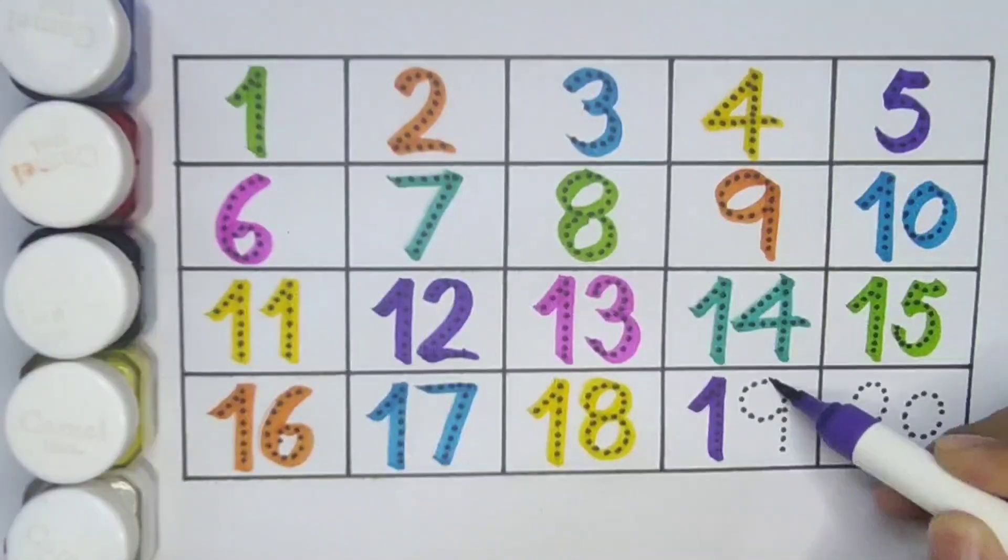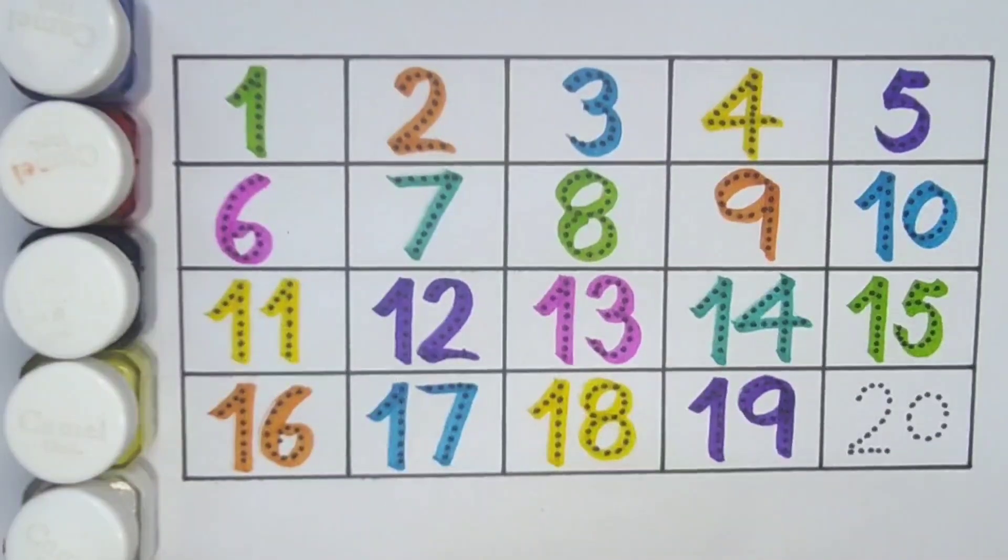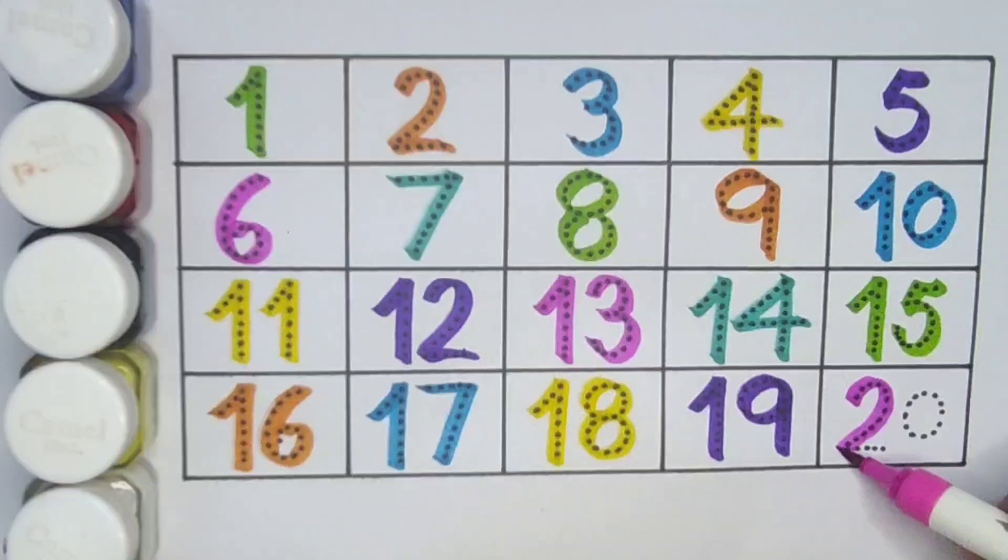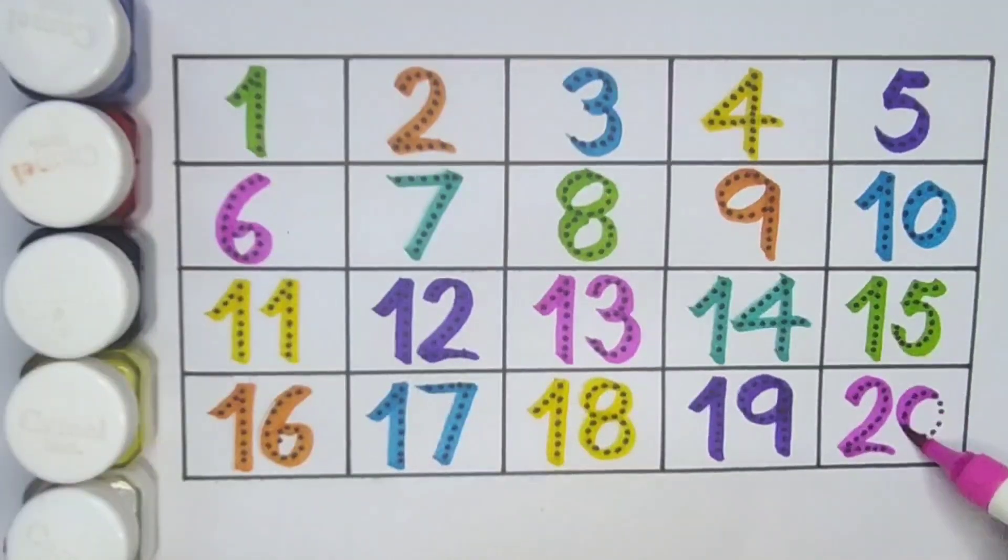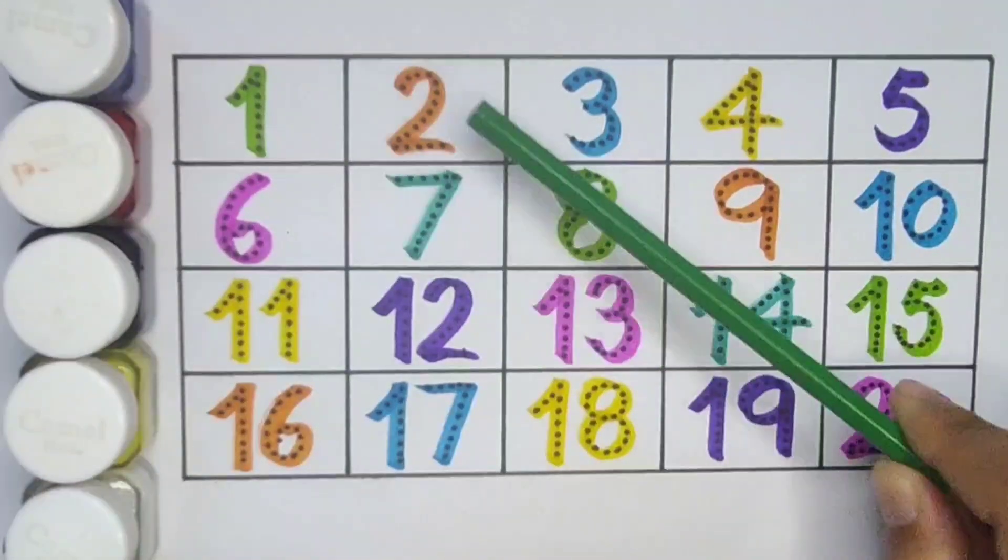Nineteen, number nineteen. Next kids, twenty, two zero, twenty, number twenty. What we learn: we learn one, two, three.